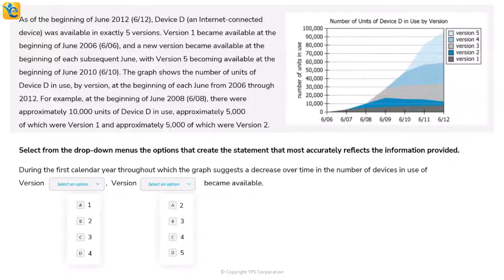This is an interesting chart showing the number of units of Device D in use by version. These are units being used, not produced or sold. The legend shows versions 1 through 5, which are all versions of the same device. The y-axis shows the number of units.